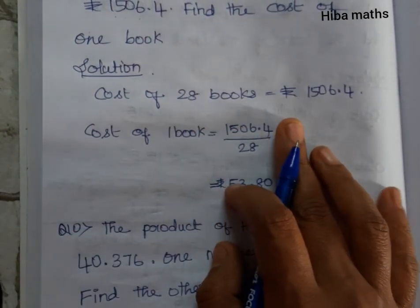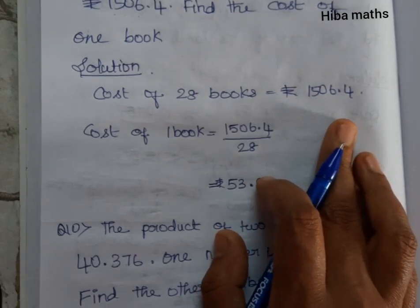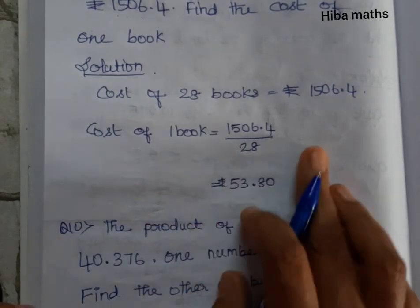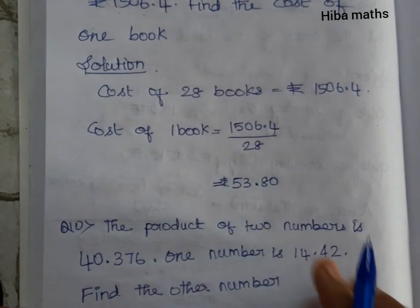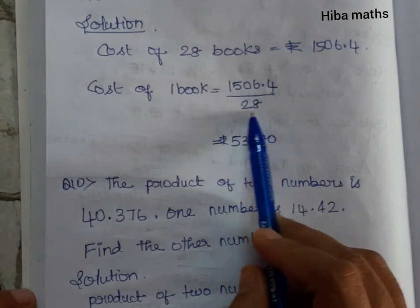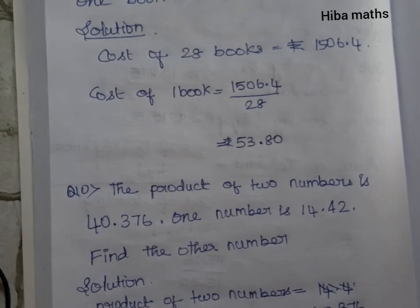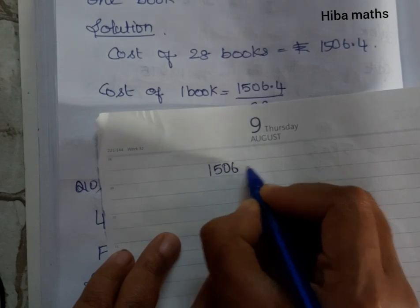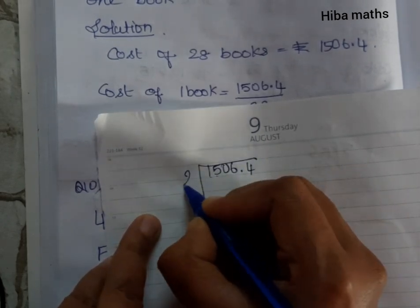Cost of 28 books is equal to rupees 1506.4. So cost of one book is equal to rupees 1506.4 divided by 28. We solve using the decimal method: divide by 10. So 1506.4 divided by 28.